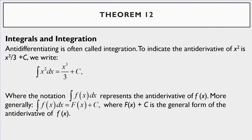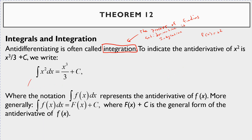Anti-differentiation is often called integration. The process of finding an anti-derivative is integration. To indicate the anti-derivative, let's take f of x equal to x squared. This is the notation for integration — we read this as the integral of x squared dx. The dx tells us what variable to integrate with respect to, so dx tells us to integrate with respect to x.